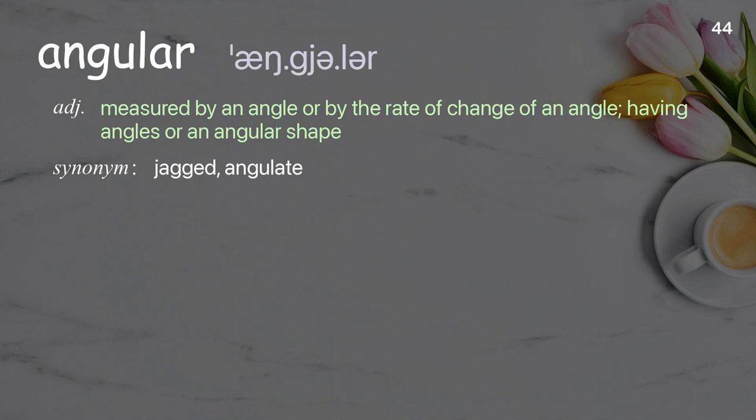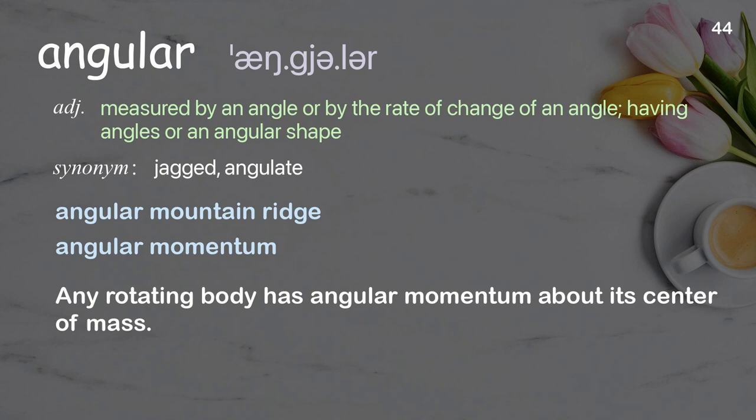Angular: measured by an angle or by the rate of change of an angle; having angles or an angular shape. Examples: angular mountain ridge, angular momentum. Any rotating body has angular momentum about its center of mass.